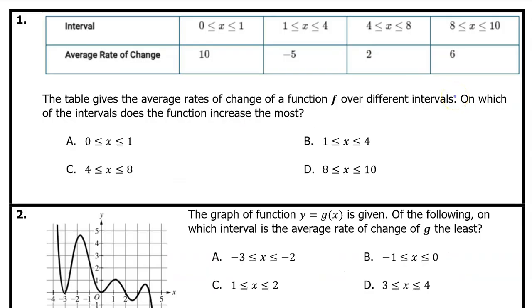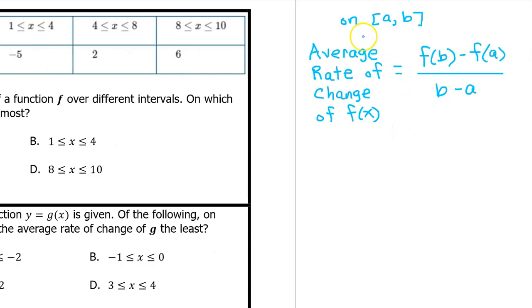Number 1. The table gives the average rates of change of a function f over different intervals. On which of the intervals does the function increase the most? On the interval from a to b, the average rate of change of f(x) is given by f(b) minus f(a) over b minus a. Notice that the expression in the top, f(b) minus f(a), is the increase on the interval from a to b.